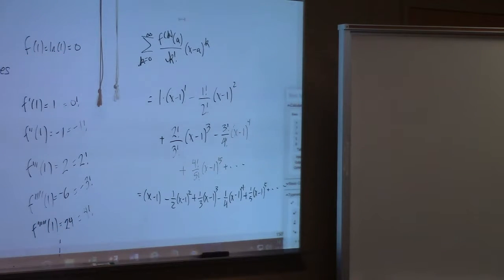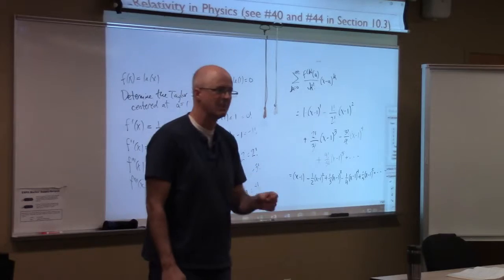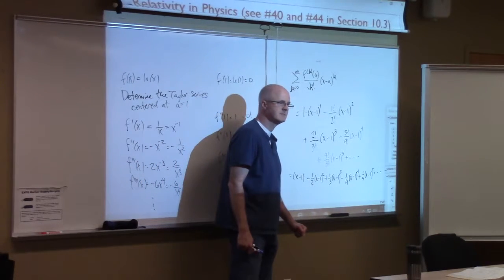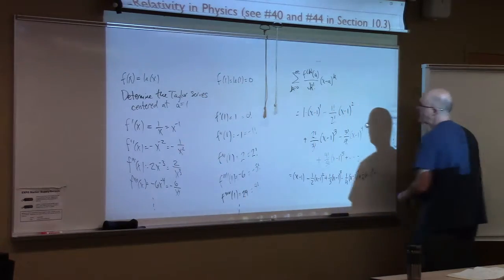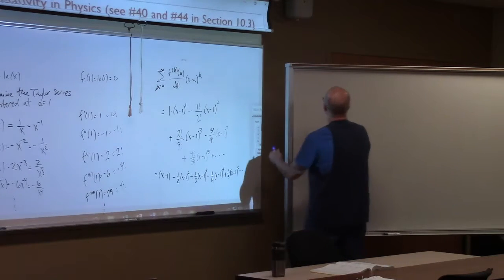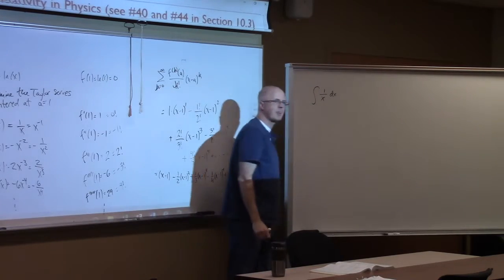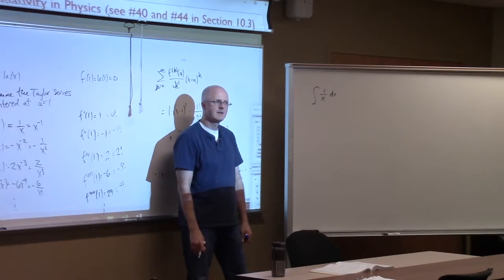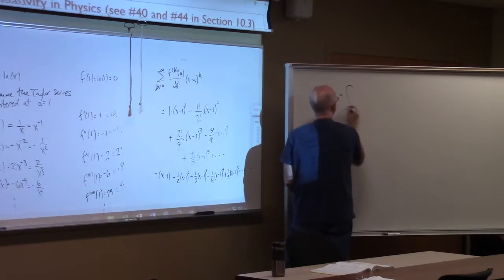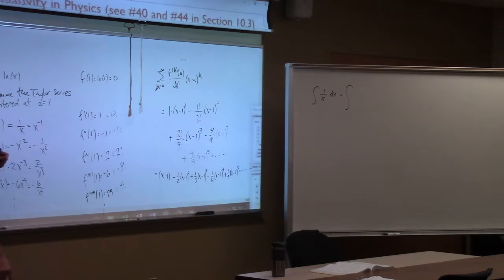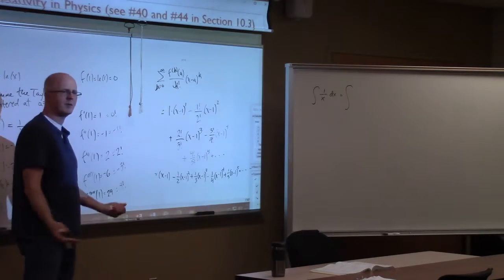That is the Taylor series for ln(x) centered at a equals one. Books often instead find the Taylor series for ln(x+1) centered at x equals zero, and the answer looks the same except with x's instead of (x−1)'s. Is there another way this Taylor series could be found? Yes — by integrating 1/x, since the integral of 1/x for positive x is ln(x). But we want the Taylor series centered at one, so we need to connect the two.